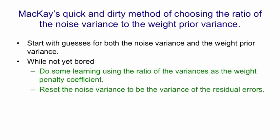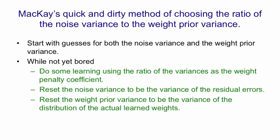Then you reset the noise variance to be the variance of the residual errors, and you reset the weight prior variance to be the variance of the distribution of the actual learned weights. And then you go back round this loop again.